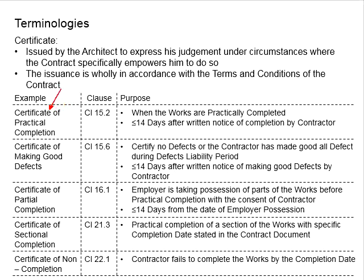First, the certificate of practical completion. This can be found in Clause 15.2 in the PEN contract. It is issued when the works are practically completed. The meaning of practical completion refers to the point at which a building project is completed. There could be minor defects which can easily be rectified without undue interference or disturbance to the occupant. In other words, practical completion means the completion of the project. Although minor defects are allowed, these defects should not be significant and can easily be rectified.